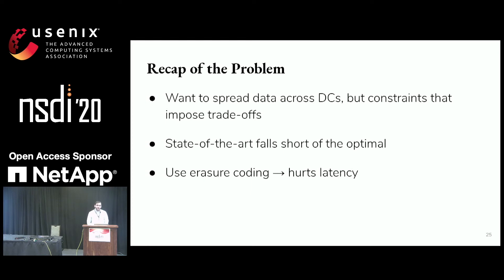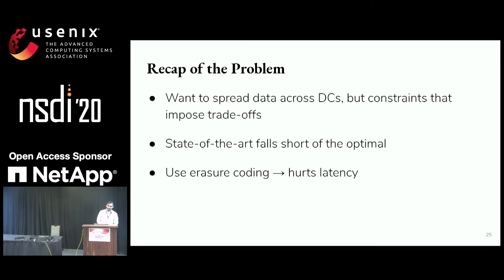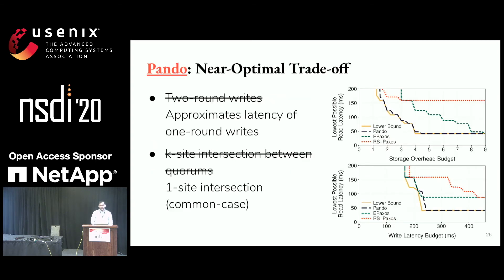ePaxos falls short of an optimal approach due to its use of replication, and simply using erasure coding means latency can actually get worse than with ePaxos. Pando, our approach, leverages erasure coding to get close to the lower bound and addresses both limitations of RSPaxos.